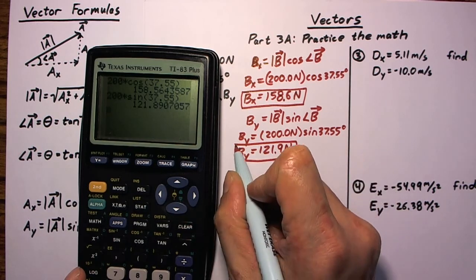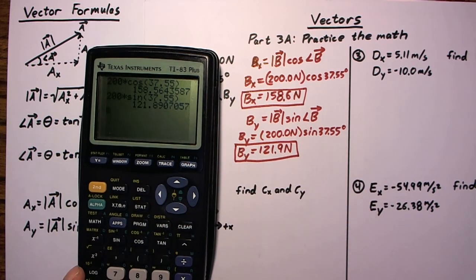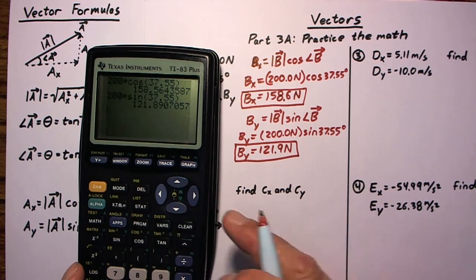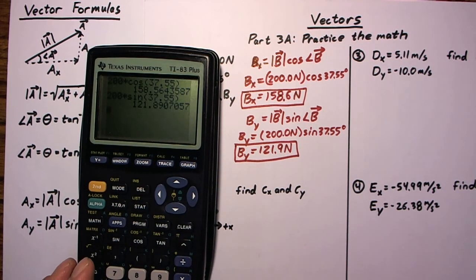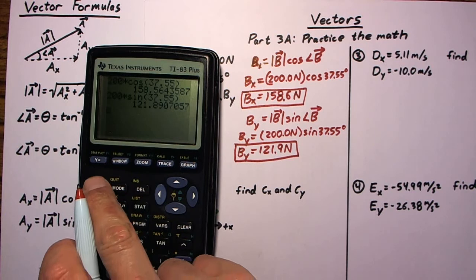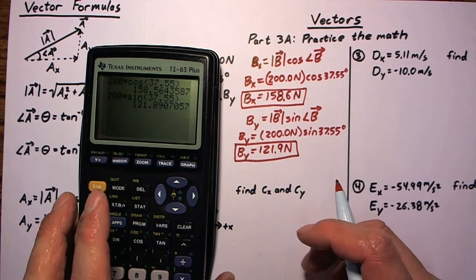Over the course of this class, you can save yourself a lot of time by learning how to use the recall function — sometimes called recall, sometimes called entry, sometimes you just hit the up button and it brings up the last operation. It varies from one calculator to the next. With TI calculators, it's almost always the shift or alternate button combined with the button you use to do the calculation.